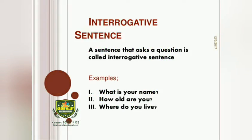The second type is the interrogative sentence. A sentence that asks a question is called an interrogative sentence. Examples: What is your name? How old are you? Where do you live? All these examples are of interrogative sentences. Interrogative sentence means the questions asked.